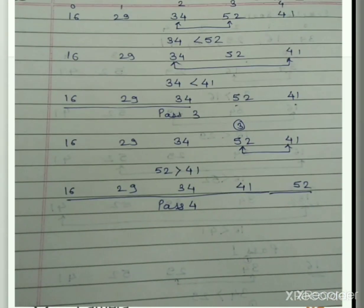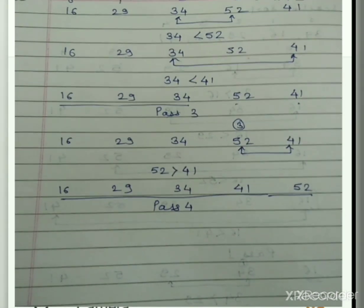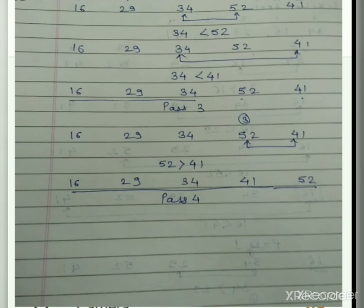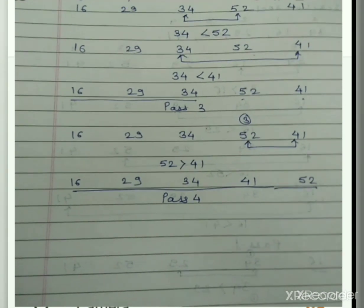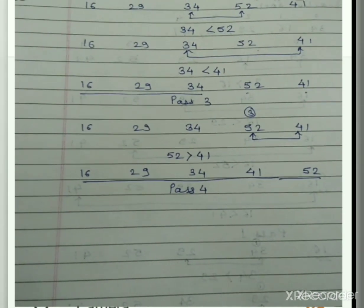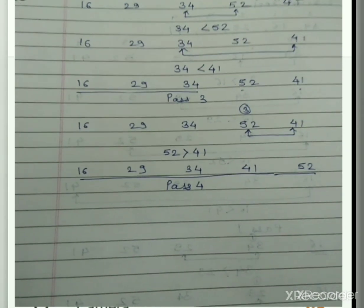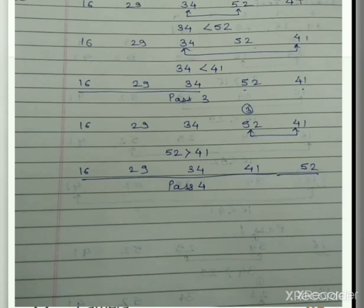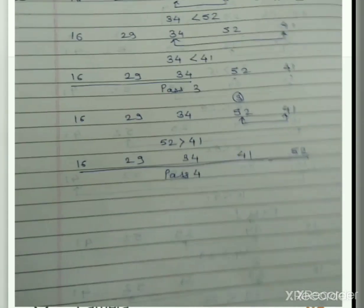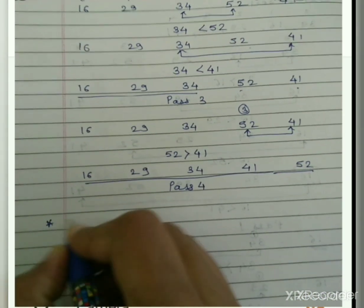To recap: in bubble sort, we compare the 0th element with the first, first with the second, second with the third, and so on in every pass. In selection sort, we select a position and compare that element with all other elements — the 0th element compared with 1st, 2nd, 3rd, and so on — to find the exact element for each position.